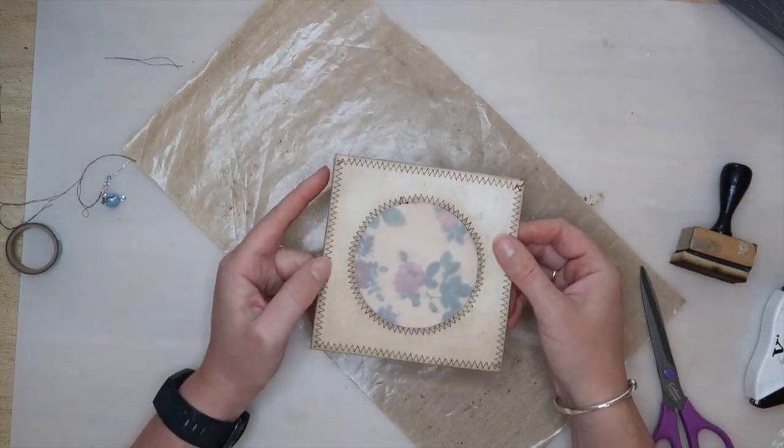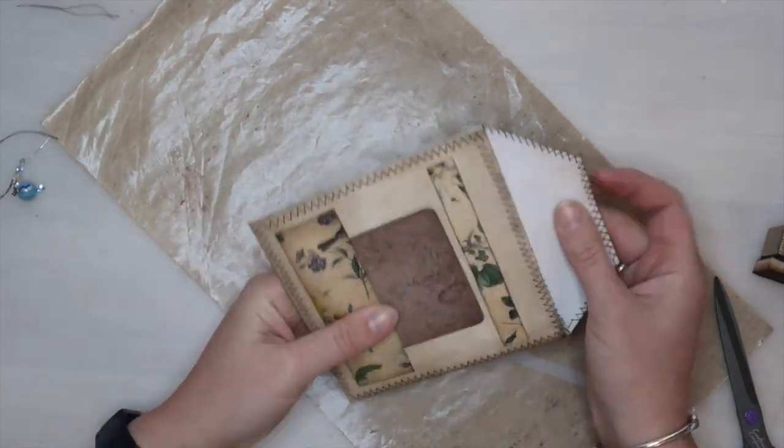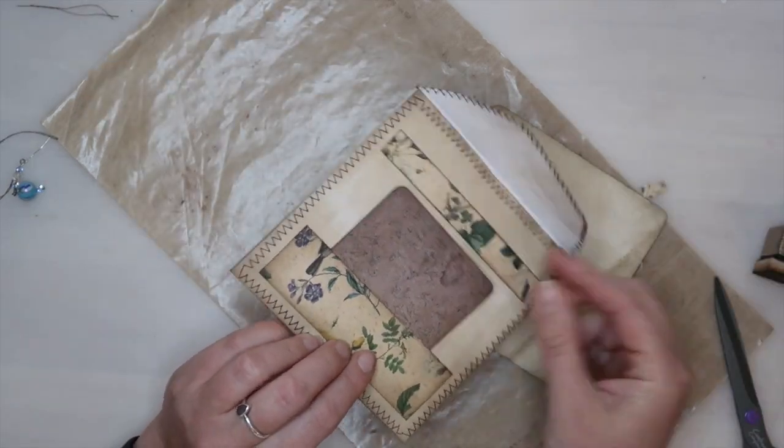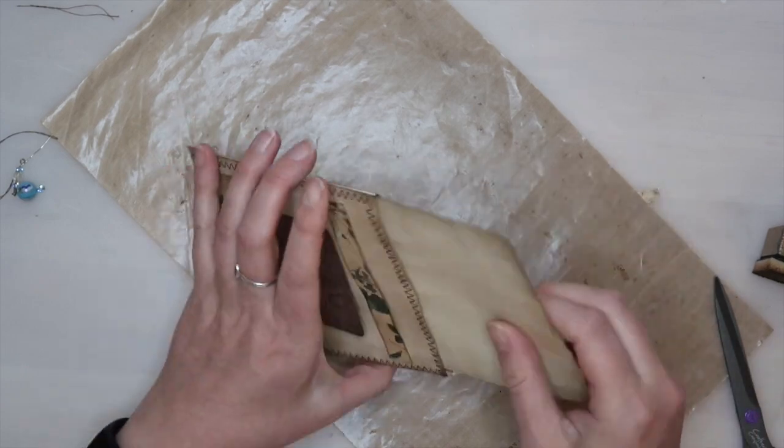I think the front would look nice with a little something overlapping the edge of the aperture but I couldn't find the right thing to use so I just left it. But maybe some die cut flowers or some paper dolls would look like it would really add something, a pop of interest to the front.